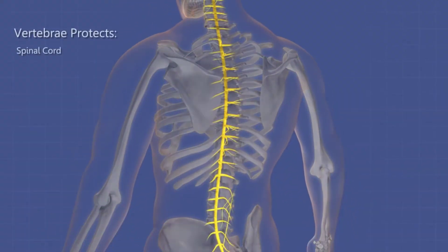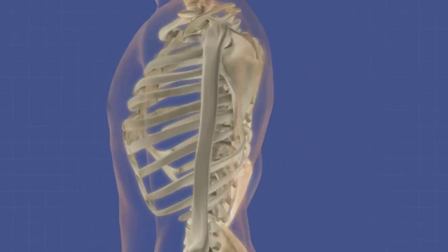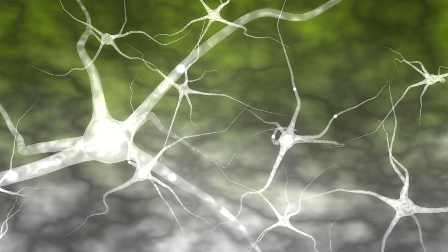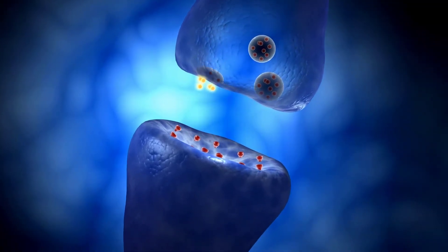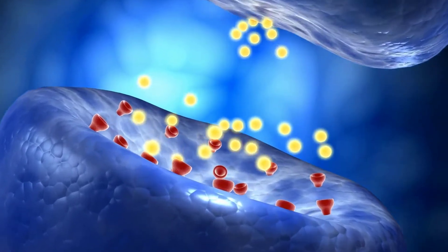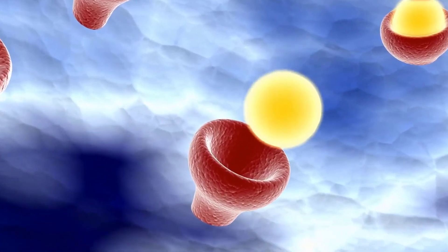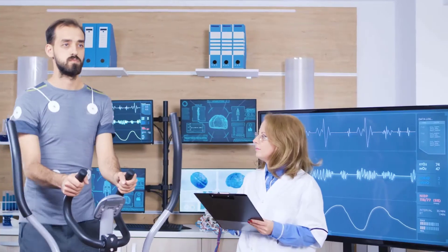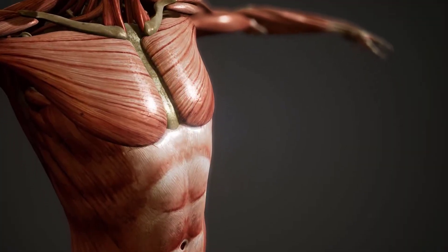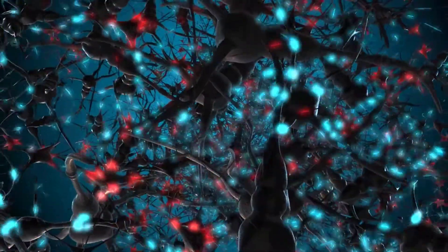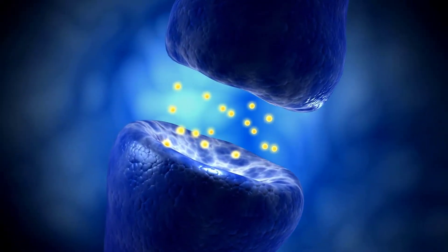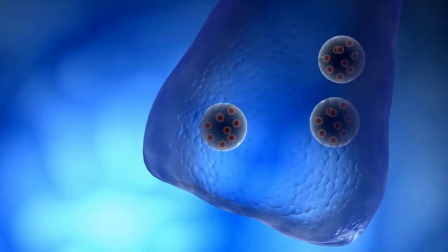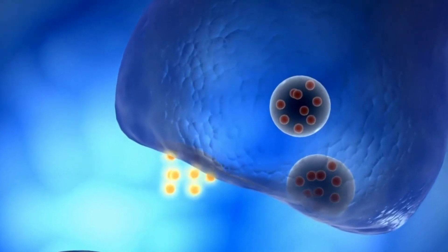Some preganglionic fibers do not synapse as they pass through both the sympathetic chain and the collateral ganglia. Instead, they enter one of the adrenal glands and synapse on modified neurons within the adrenal medulla. These cells release norepinephrine and epinephrine, causing a prolonged sympathetic stimulation effect. In a crisis, the entire division responds in an event called sympathetic activation. Its effects include increased alertness, feelings of energy and euphoria, increased cardiovascular and respiratory activity, a general increase in muscle tone, and mobilization of energy reserves. Stimulation of the sympathetic division results in the release of norepinephrine, or in some cases acetylcholine, at neurovector junctions, and the secretion of epinephrine and norepinephrine into general circulation.